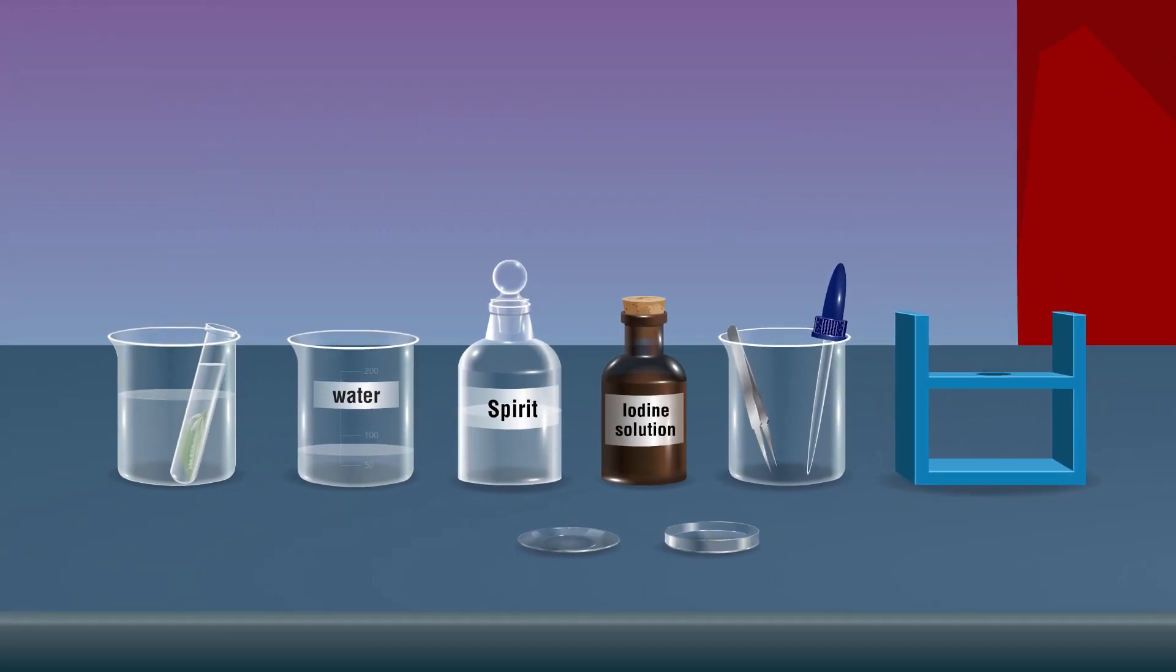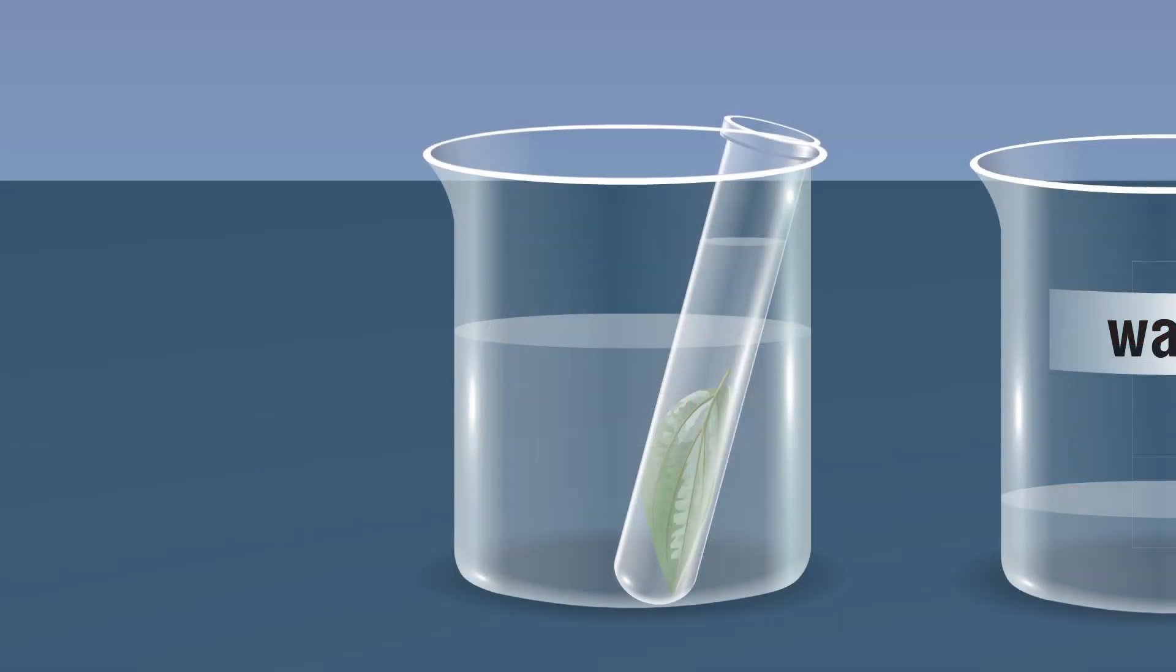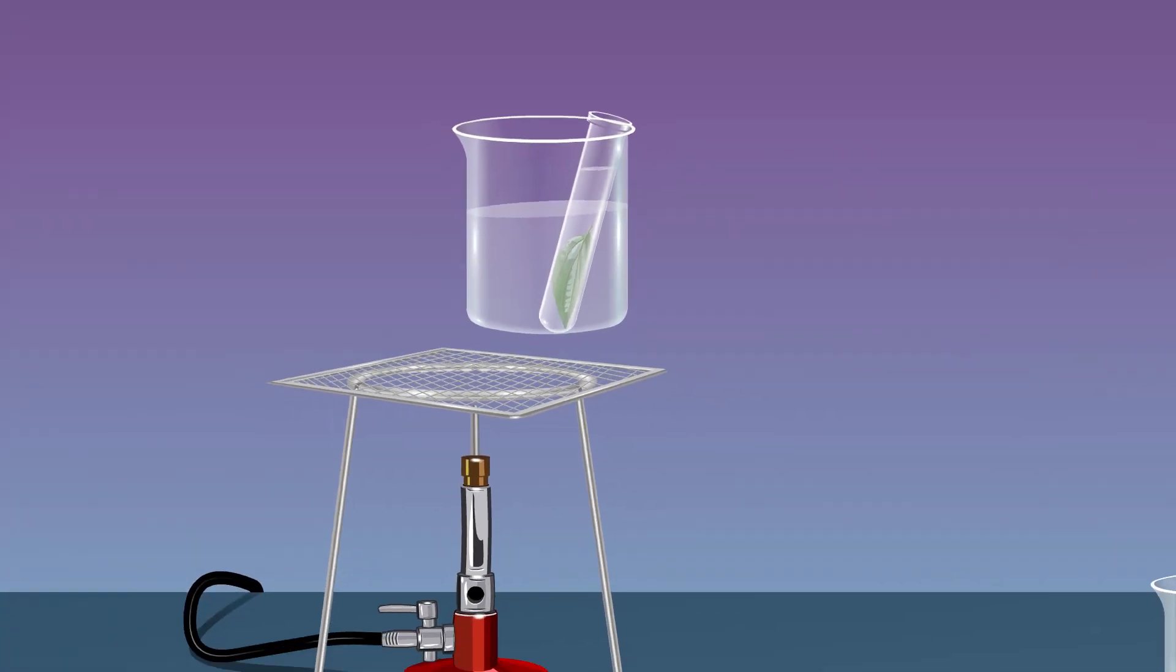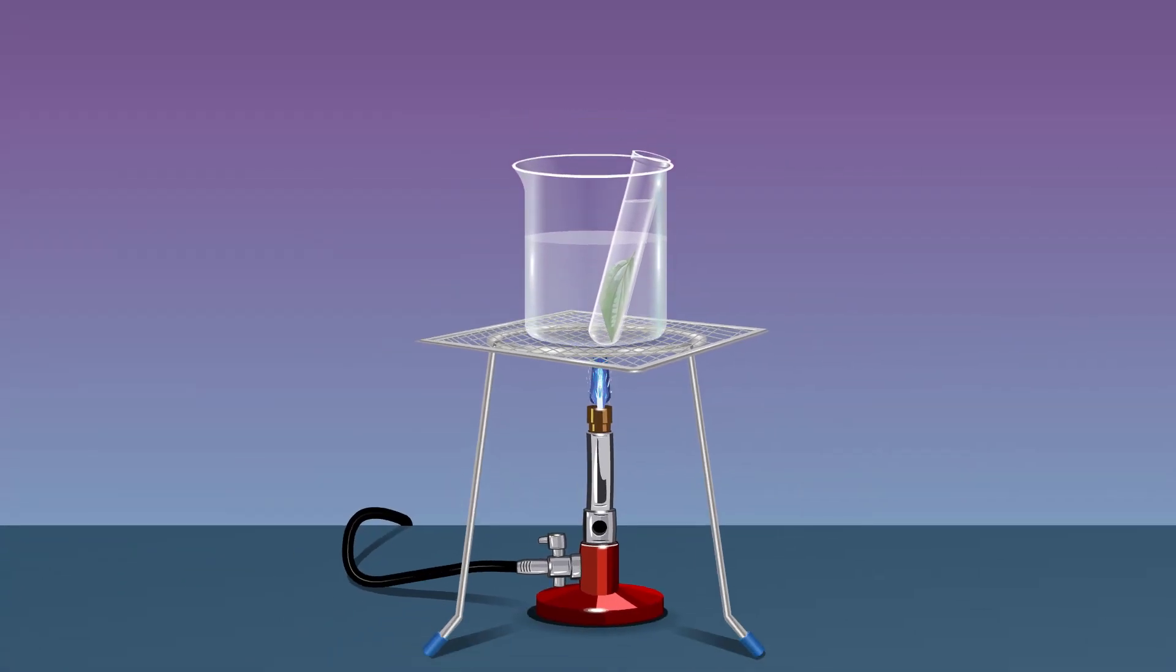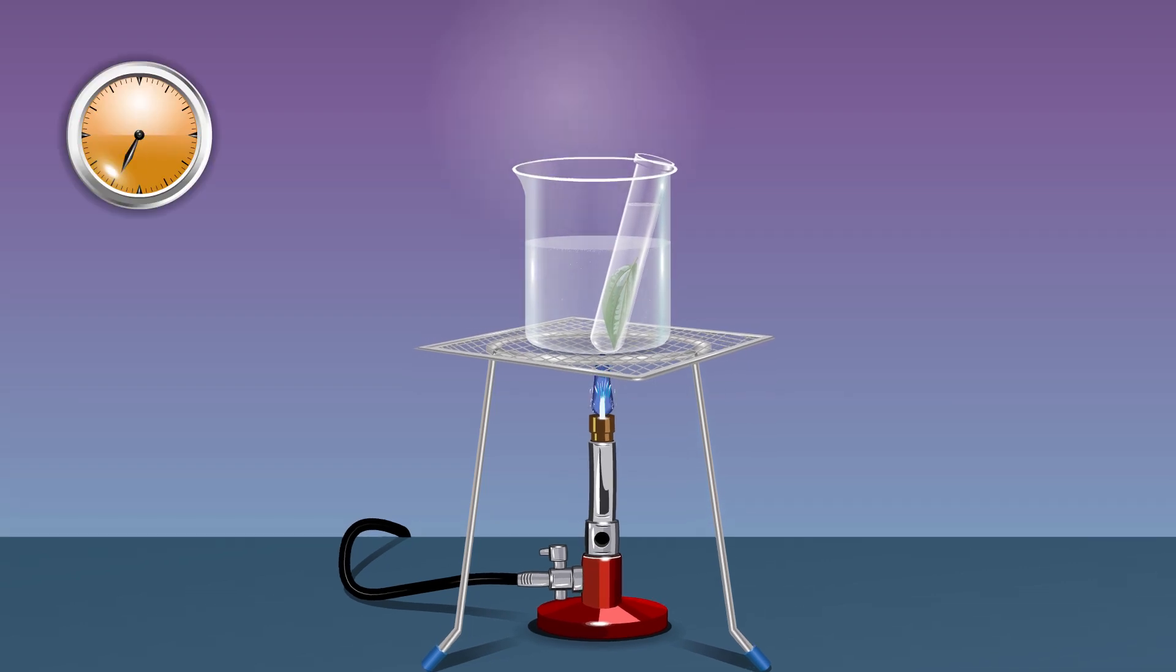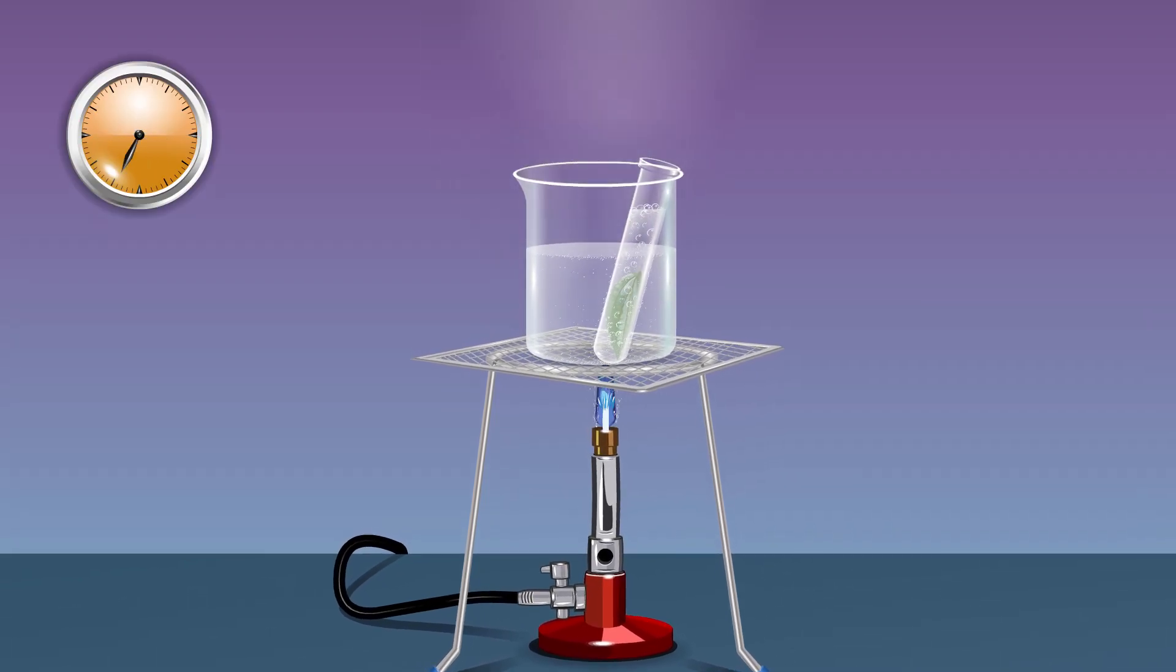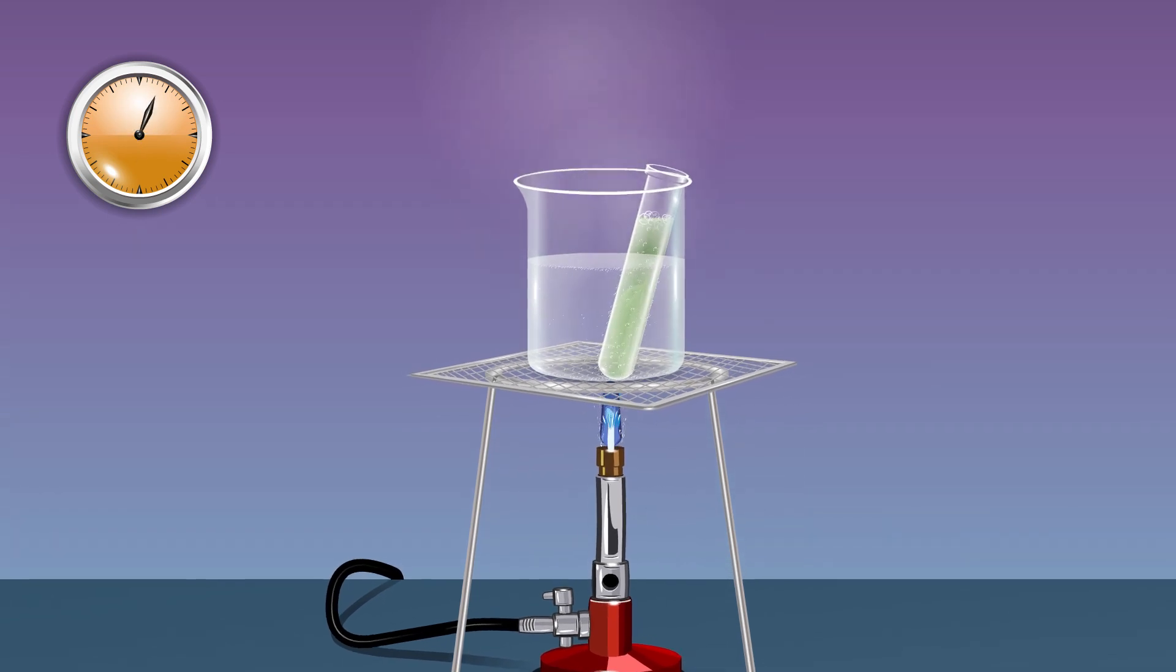Keep the test tube in a beaker half filled with water. Place the beaker on a tripod stand. Boil the water until the spirit becomes green and the leaf becomes colourless.